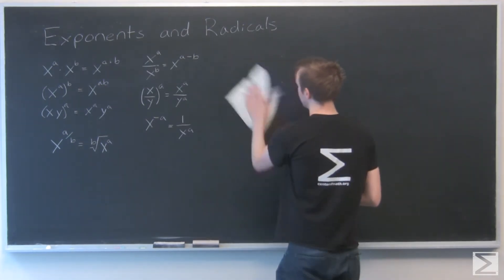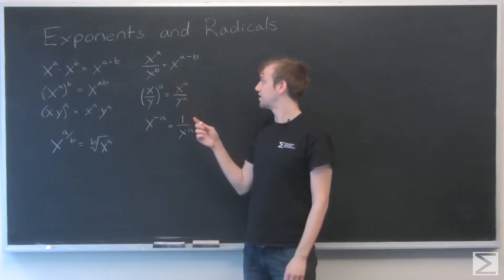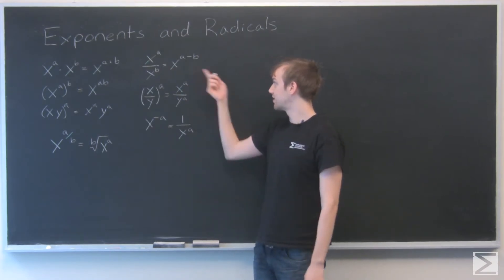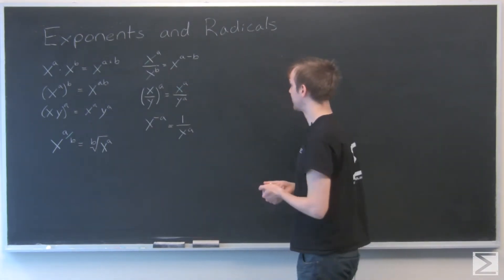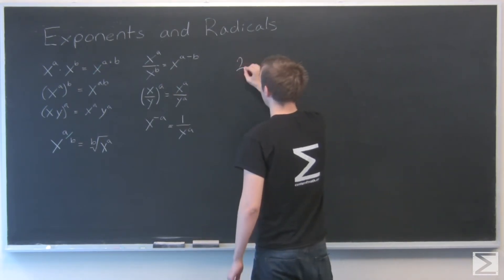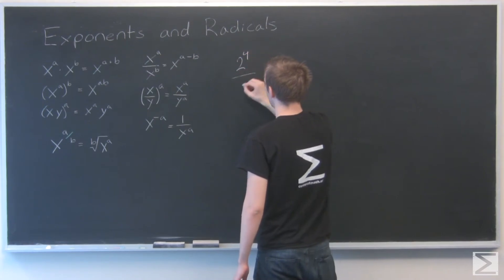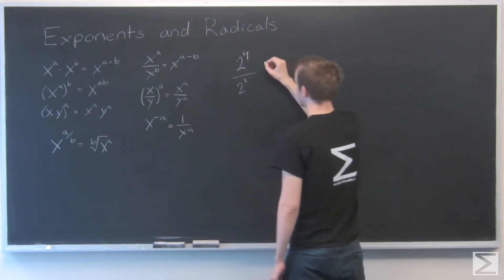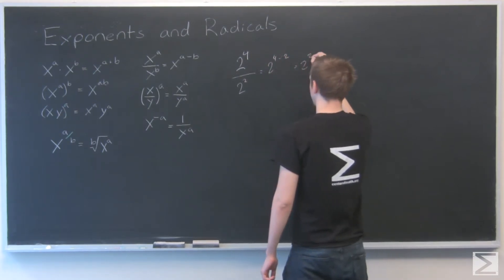When you have a fraction with the same base: x to the a over x to the b equals x to the a minus b. For example, 2 to the fourth over 2 squared equals 2 to the 4 minus 2, which is 2 squared.